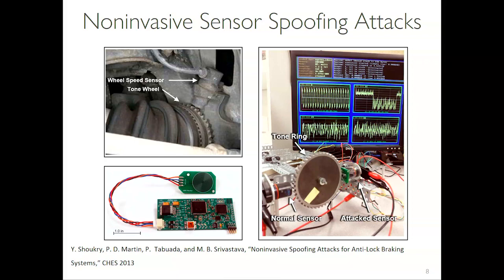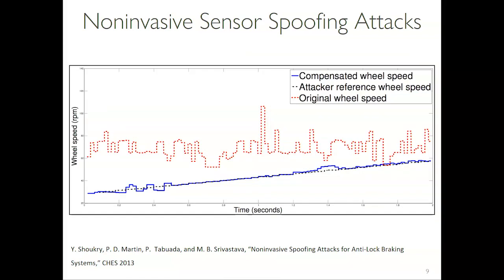We implemented this attack module using parts from a real Mazda car. On the testbed, we have two sensors — one under attack, one without. Here is a result: the red curve is the actual wheel speed without any attack, the black curve is the attacker's intended reading, and the blue curve is what the attacked sensor is actually reading. You can see our system can fool the sensor into reading exactly what the attacker intends.